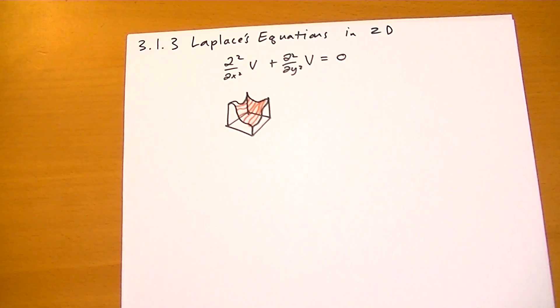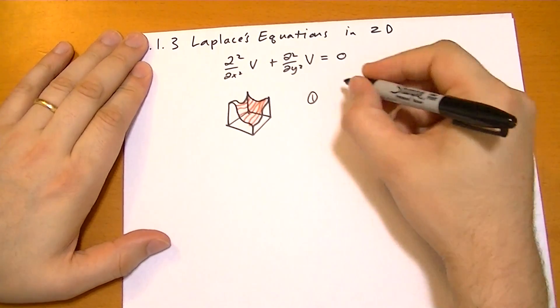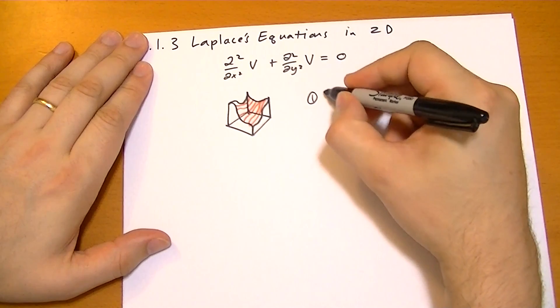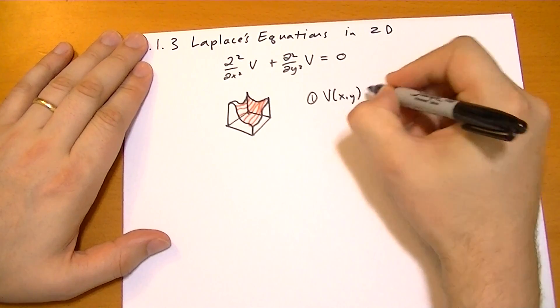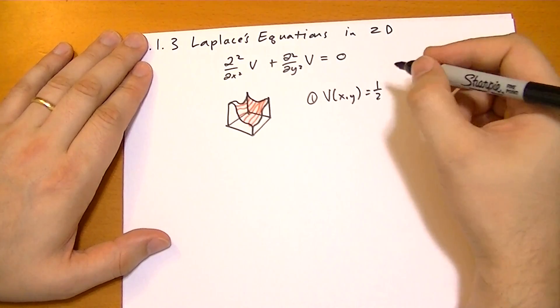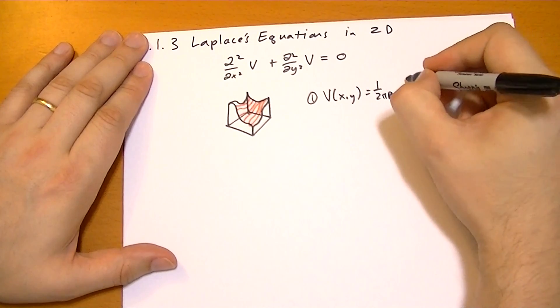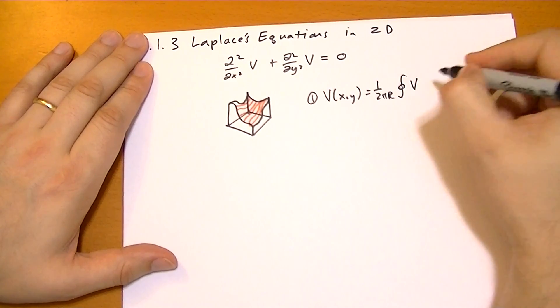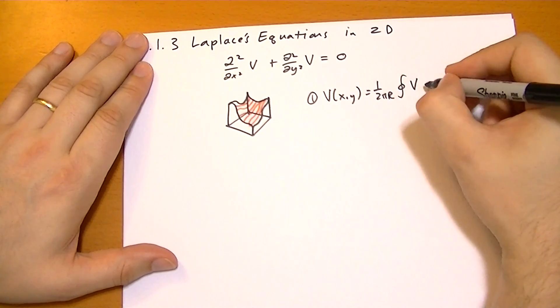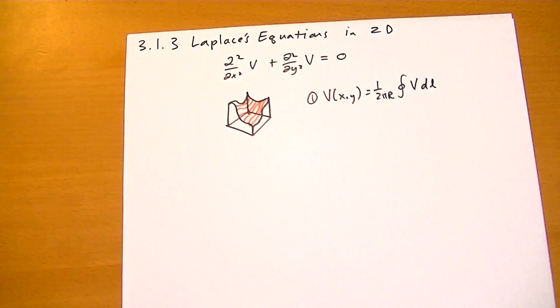And the two facts still hold. We talked about it in the first dimension. The first fact is that for any potential at x and y, it's going to be equal to one over 2 pi r, let's say. We're going to do some circle of the potential at some circle radius r times the length of that line segment around that circle.